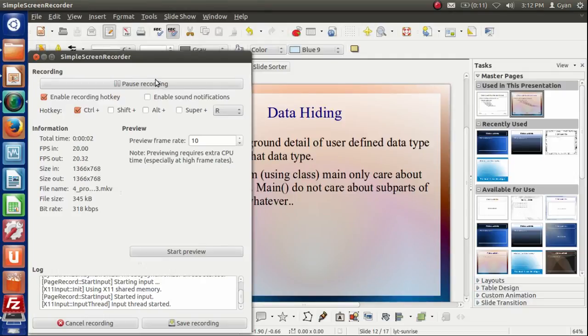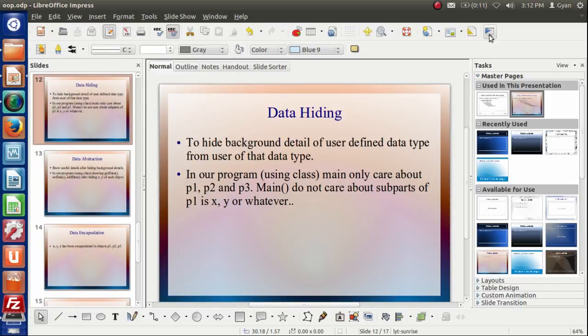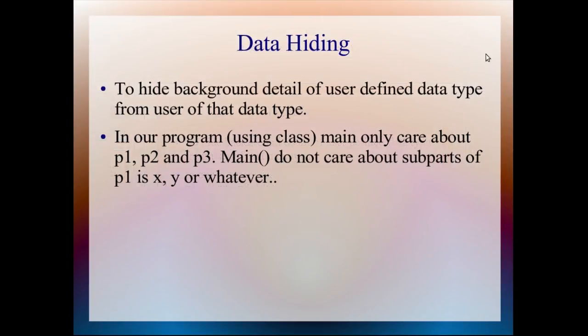Let us discuss some features of object-oriented programming. First of them is data hiding. Data hiding is to hide background details of user-defined data types from the user of that data type.